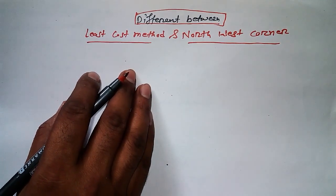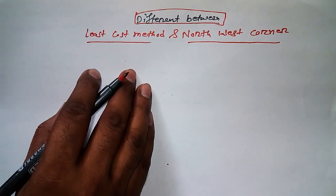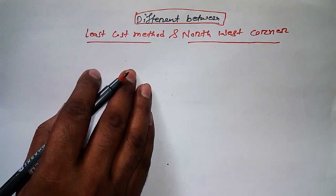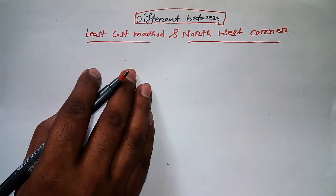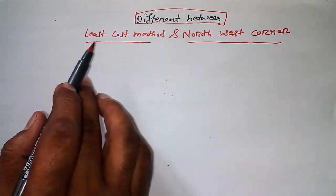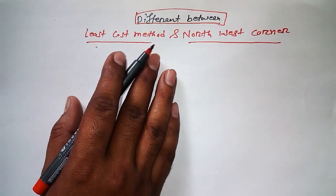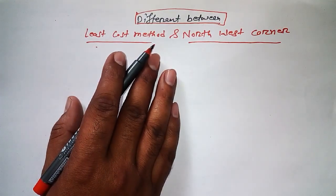We have started about four methods in transportation problem: one is Northwest, Least Cost, Vogel's Approximation or Penalty Method, and then we have gone to the next one, that is MODI method.